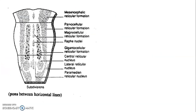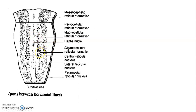This picture shows the different cells of the reticular formation. You have parvocellular cells, magnocellular cells, cells of the raphe nuclei, and gigantocellular cells that are really big.